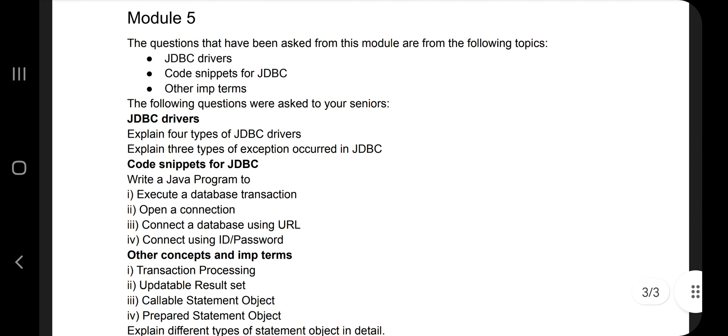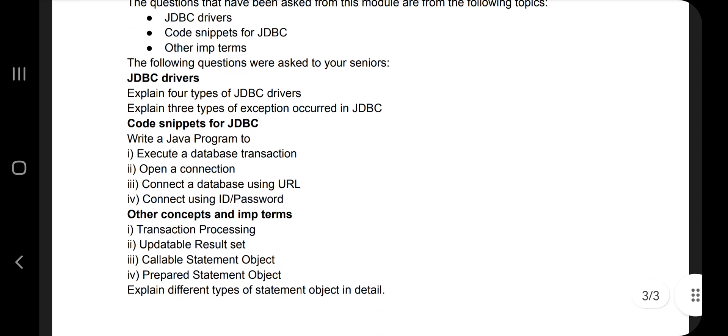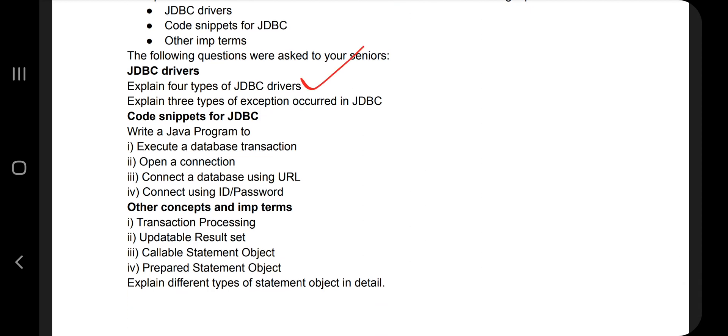Moving on we have the last module. In that the main topic is JDBC drivers. Very few questions are there and the main topic is JDBC drivers and then comes the code snippets. So explain four types of JDBC, three types of exception - this is more important one - and write a program to execute a database transaction, open a connection, and connect a database using URL, connect using ID and password. Other concepts like the transaction processing, updatable result, callable statement, prepared statement, different types of statement object in detail you have to explain.